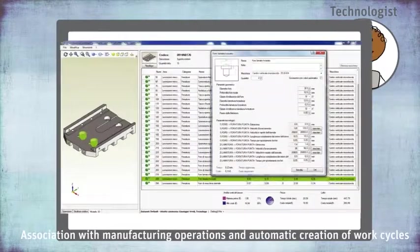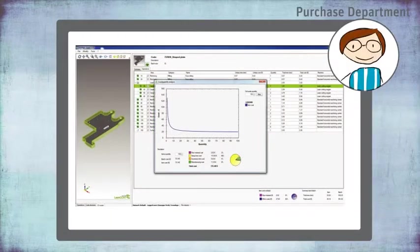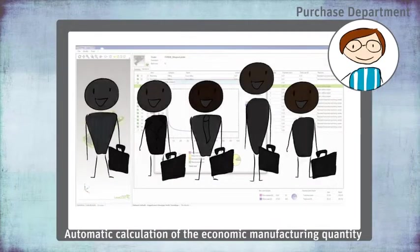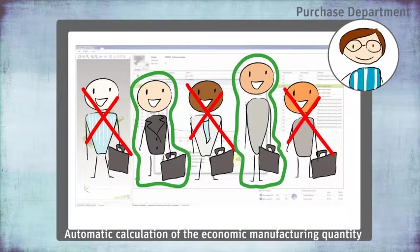Peter verifies and modifies the values of the technological parameters in order to optimize the project cost. Luca opens the lean cost files to choose between make or buy strategies, thanks to the fast comparison between suppliers' estimates and simulations based on different manufacturing scenarios.